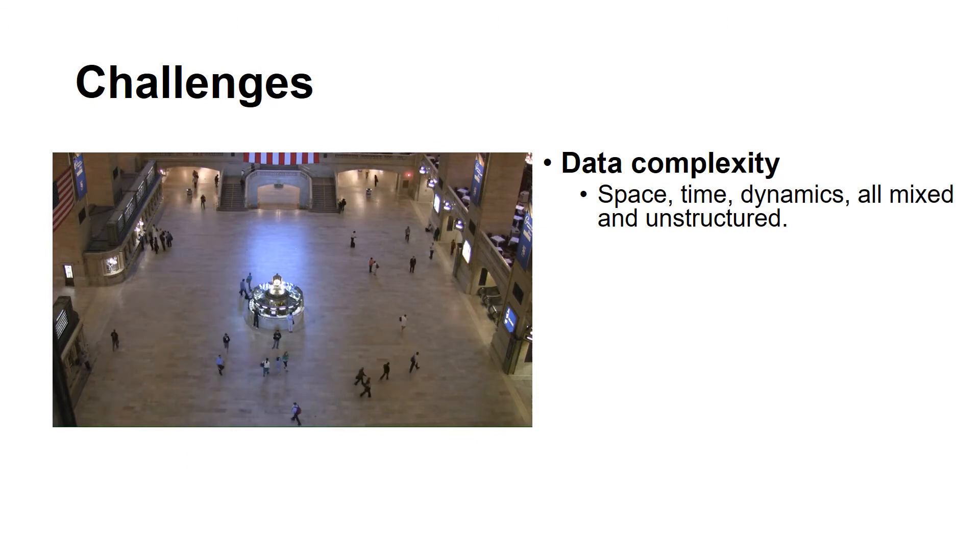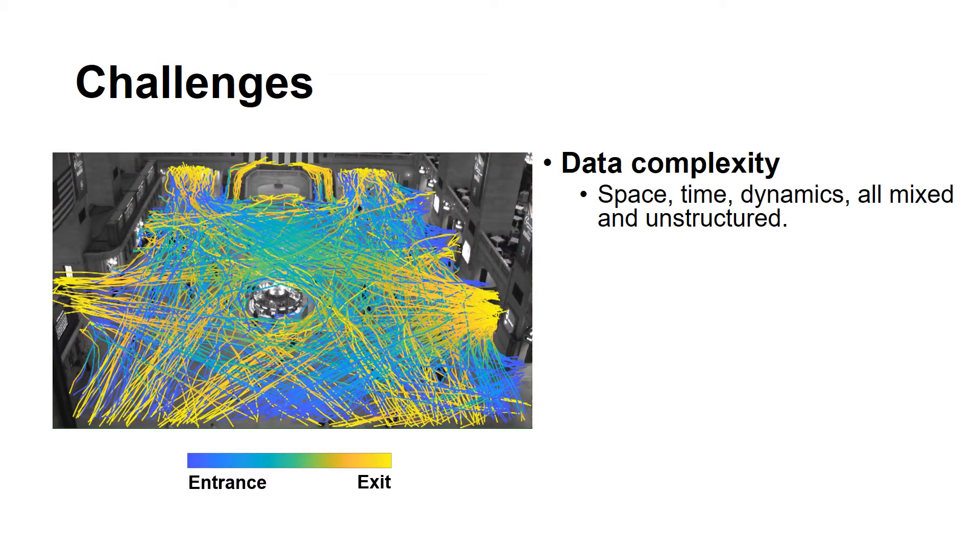In trajectories extracted from videos, which is one of the most prevalent forms of crowd data, the space, time, and dynamics information is mixed and unstructured. This makes the initial analysis difficult.